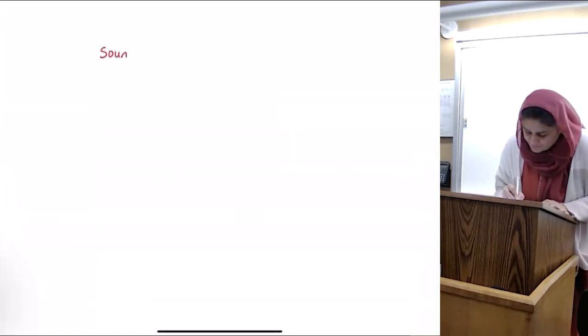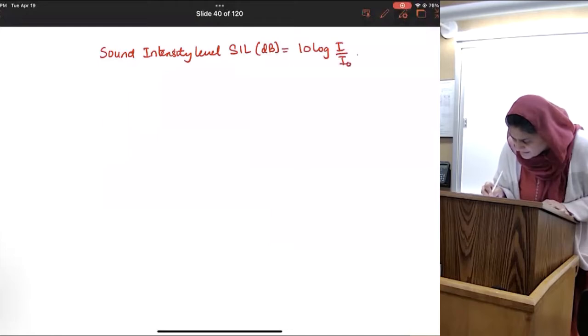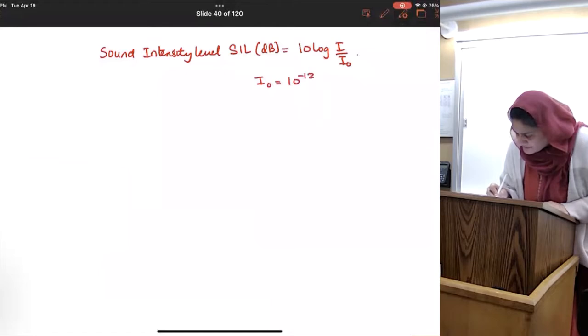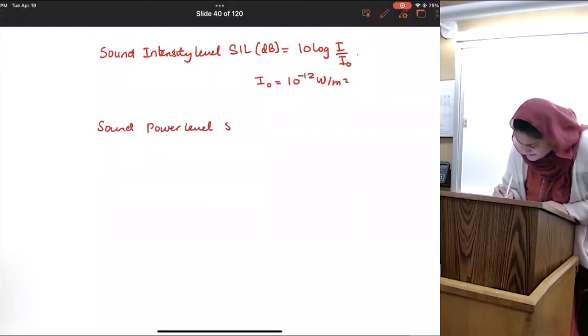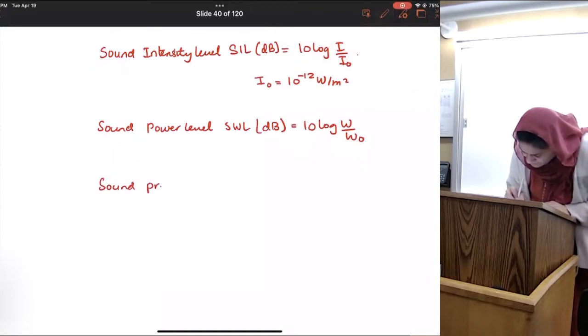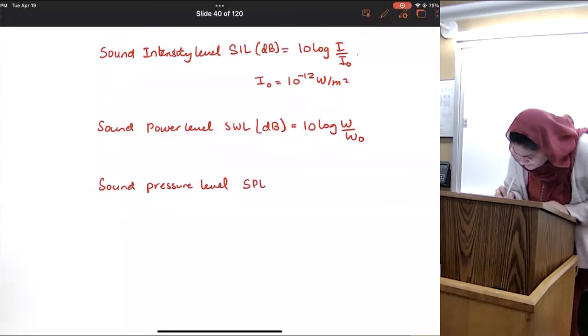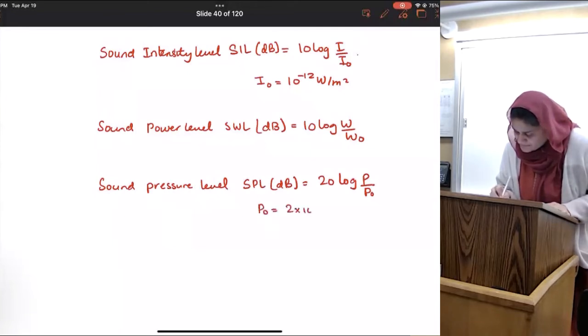So this is what we wrote out. Sound intensity level: SIL (dB) = 10 log(I/I₀), and I₀ is 10 to the minus 12 watts per meter squared. Then I wrote sound power level: SWL (dB) = 10 log(W/W₀). And then I wrote sound pressure level: SPL (dB) = 20 log(P/P₀), where P₀ is 2 times 10 to the minus 5 Pascals.